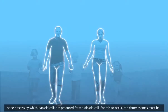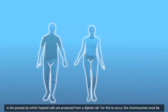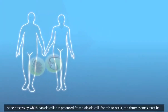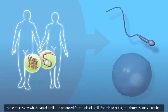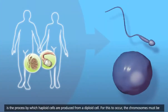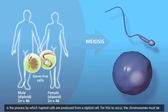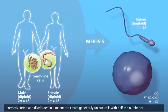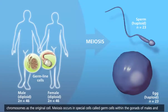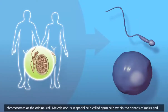Meiosis is the process by which haploid cells are produced from a diploid cell. For this to occur, the chromosomes must be correctly sorted and distributed in a manner to create genetically unique cells with half the number of chromosomes as the original cell.